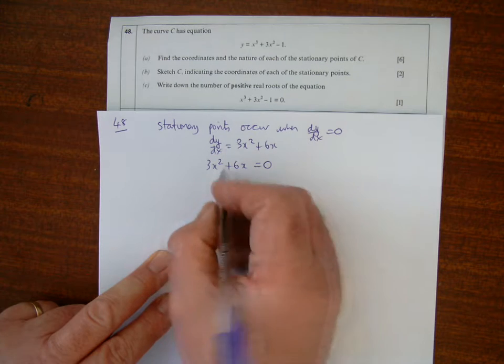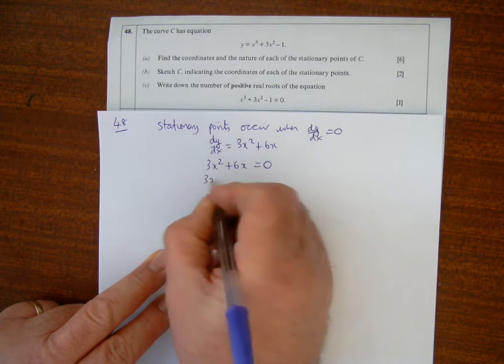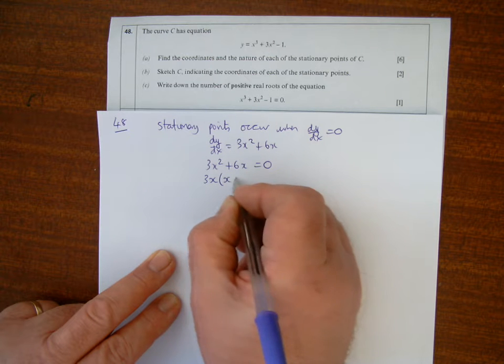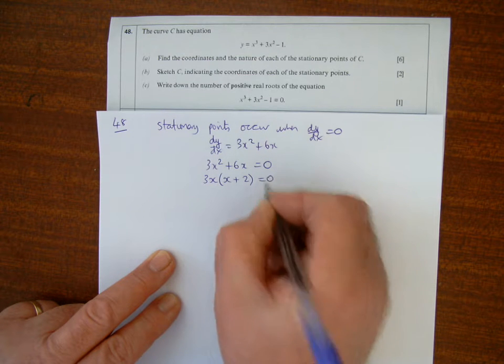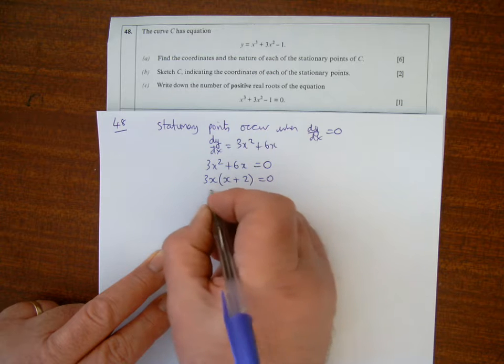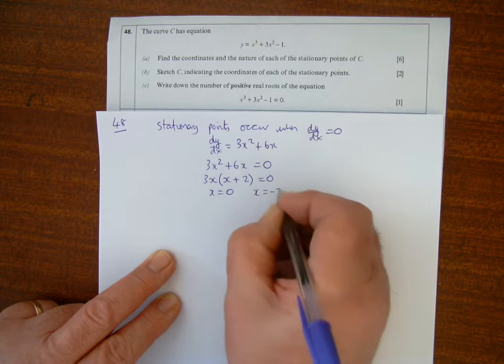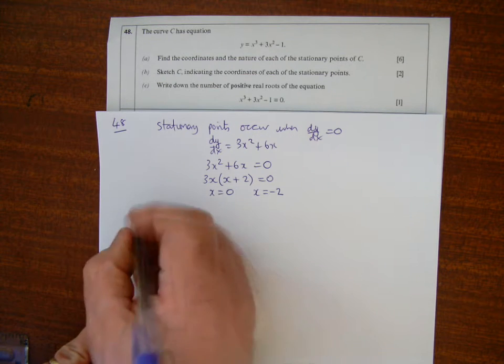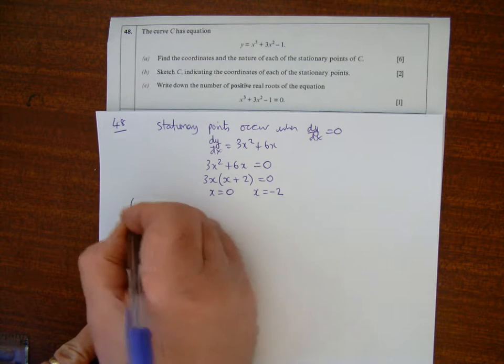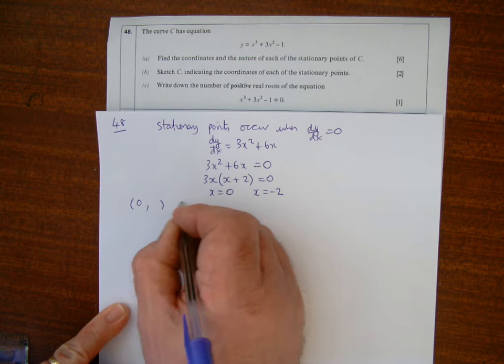3x is a common factor, giving 3x(x + 2) = 0. So x equals 0 or x equals -2. Those are my two x values, giving coordinates (0, something) and (-2, something).